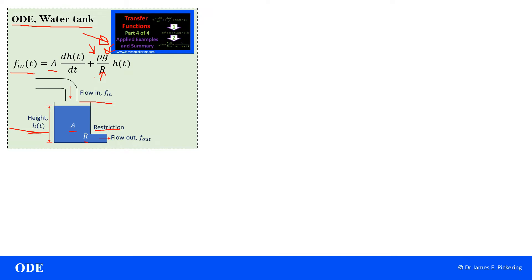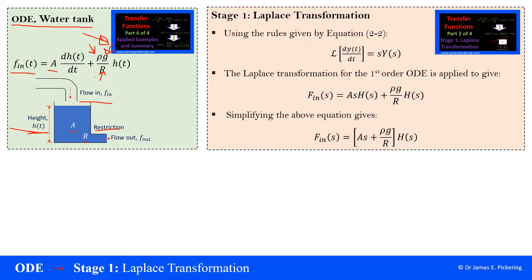And R is the restriction. So the restriction effectively in this outlet here for the flow out. So again, H(t) here is just the changing of the height. So what we're going to do is, first of all, stage 1 is to undertake the Laplace transformation.